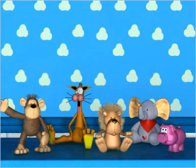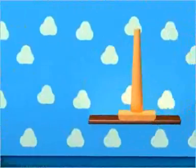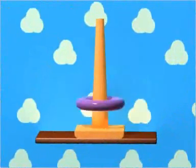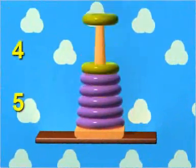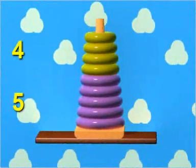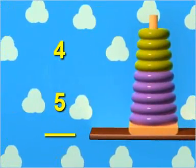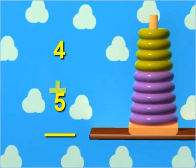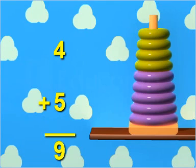The second method is to add the numbers by arranging them vertically, that is one below the other. A horizontal line is drawn below the last number to be added, and the plus sign is written on the left-hand side of the last number. The answer is written below the horizontal line.